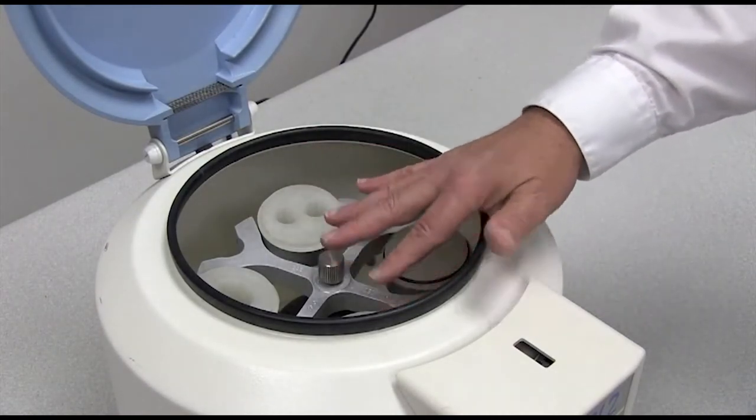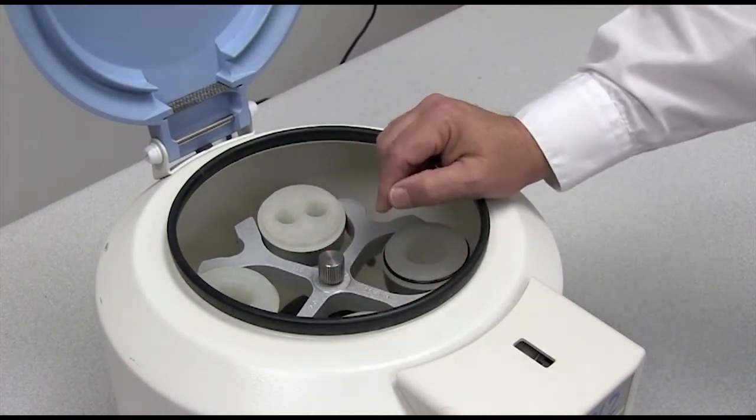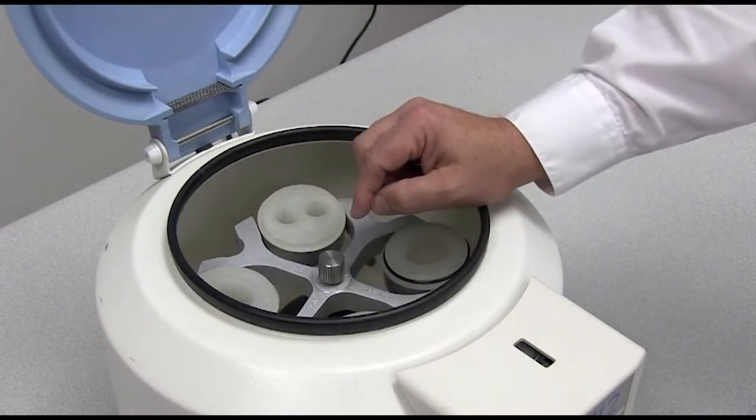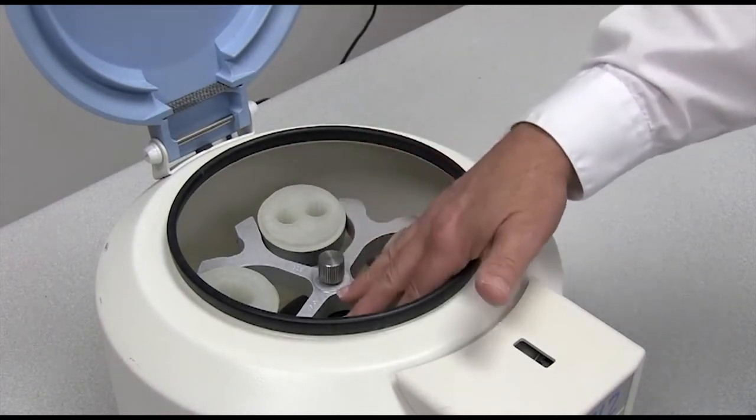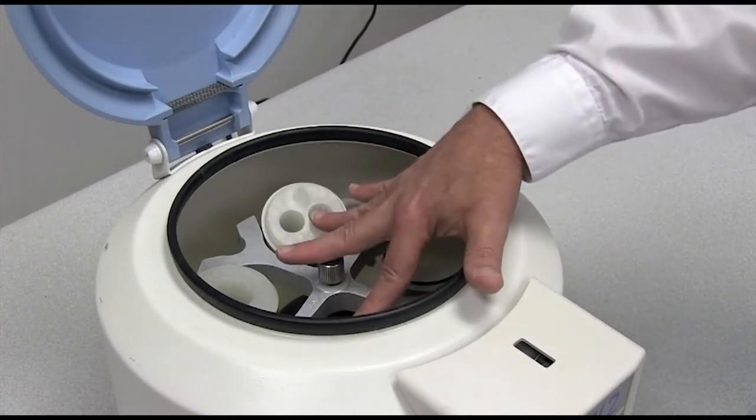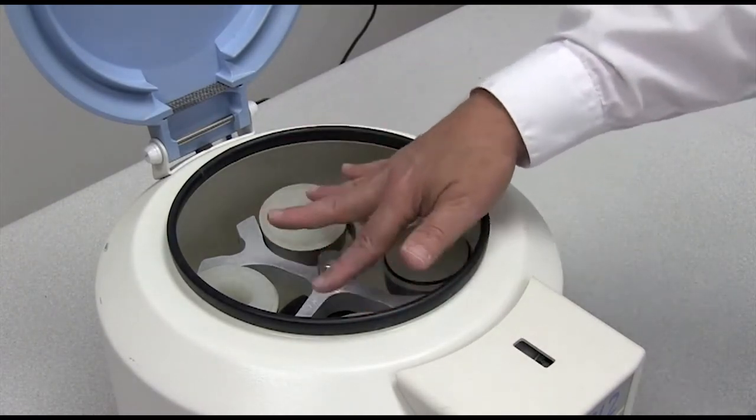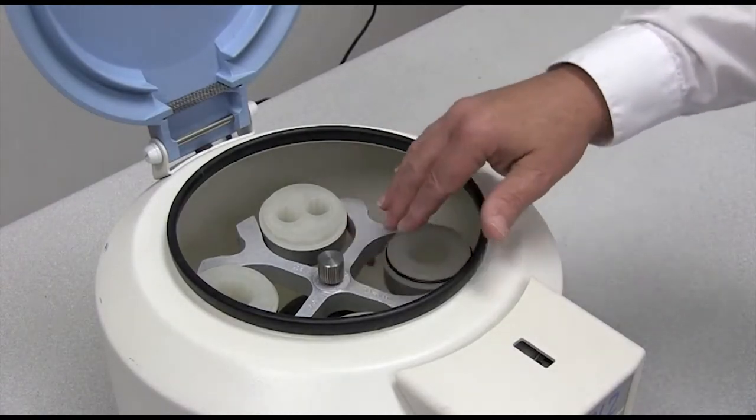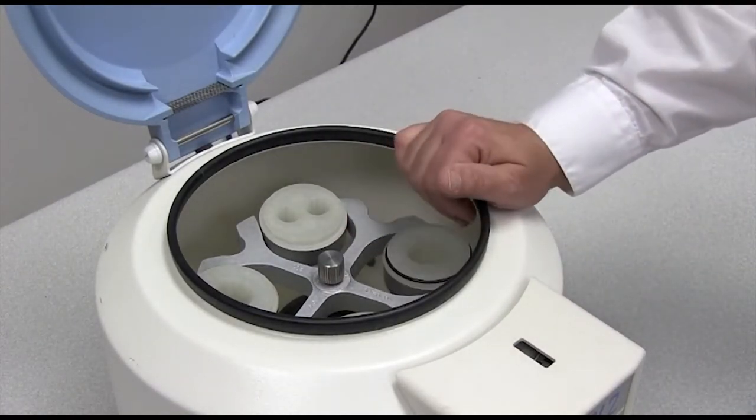So you would not want to place different size tubes or different types of carriers opposite each other, because the 15 ml carriers are meant to be balanced with 15 ml tubes and the 50 ml carriers should be matched also.